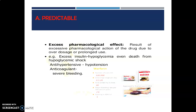Under predictable ADR, the first subtype is excessive pharmacological effect. It is a result of excessive pharmacological action of a drug due to overdosage or prolonged use. For example, excess insulin causing hypoglycemia and even death from hypoglycemic shock. A second example is antihypertensives or anticoagulants causing severe adverse effects. These are examples of excessive pharmacological effect — more than the required or normal amount.